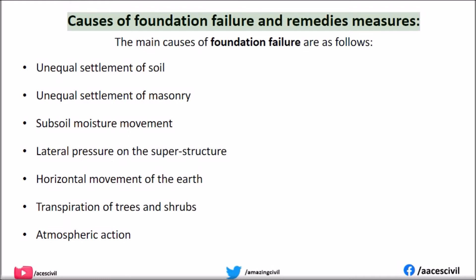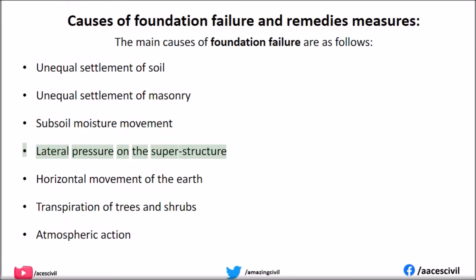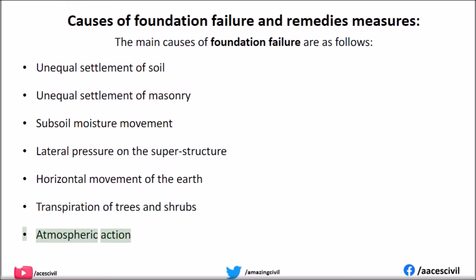Causes of foundation failure and remedy measures. The main causes of foundation failure are as follows: Unequal Settlement of Soil, Unequal Settlement of Masonry, Subsoil Moisture Movement, Lateral Pressure on the Superstructure, Horizontal Movement of the Earth, Transpiration of Trees and Shrubs, and Atmospheric Action.